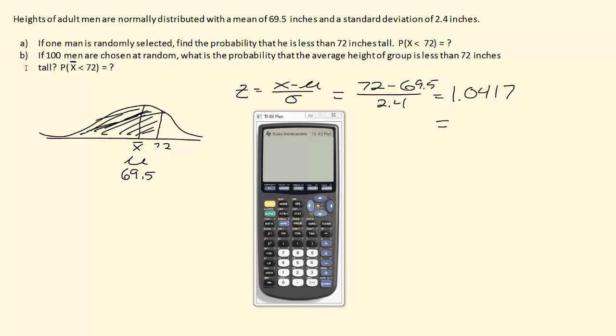If we want to use technology we can break out our graphing calculators. Go to the normal CDF function, which was second VARS. This brings up all of our different distribution formulas and functions. If we choose the normal CDF function we now have to give it a lower bound, an upper bound, and then the mean and standard deviation. Now if we're doing z-scores, if we leave the mean and standard deviation off it just assumes a standard normal curve and it uses the mean and standard deviation of 0 and 1.